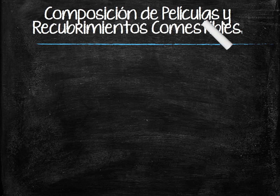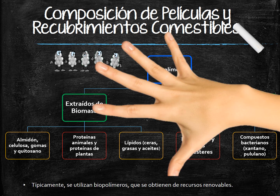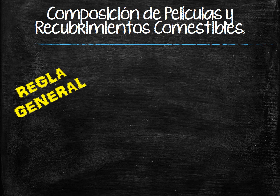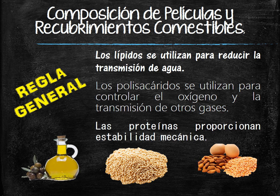Edible films and coatings composition: Biopolymers. These can be extracted from biomass, synthesized from biomonomers, or produced from microorganisms. As a general rule, lipids are used to reduce water transmission, polysaccharides are used to control oxygen and other gases transmission, and proteins provide mechanical stability.